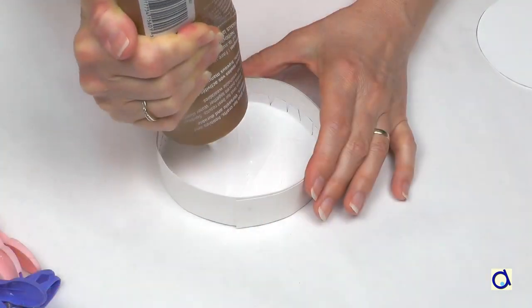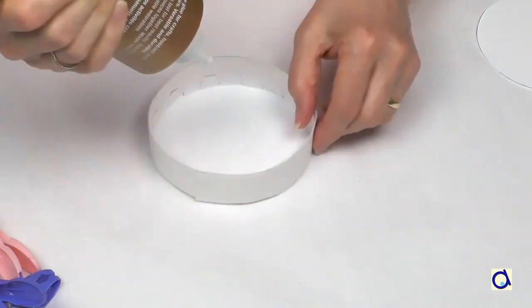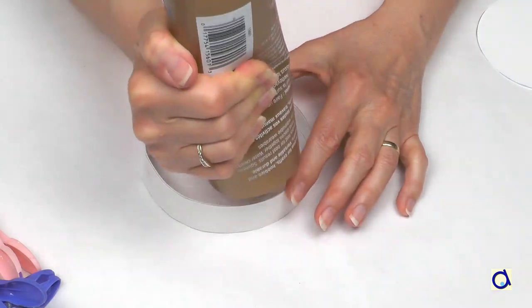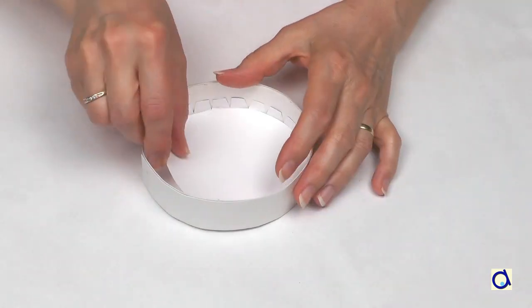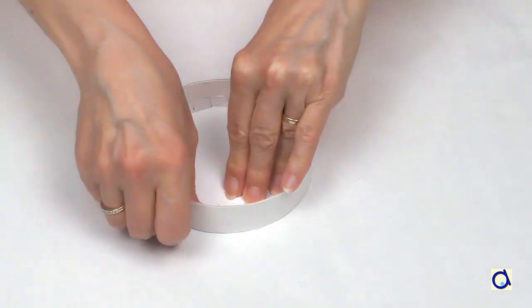If you want to make the surface of the circle stronger, print or copy the second pattern on thick paper or cardboard. Glue that circle with white glue inside the box.